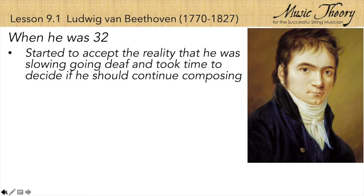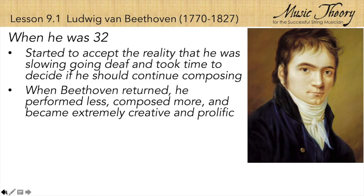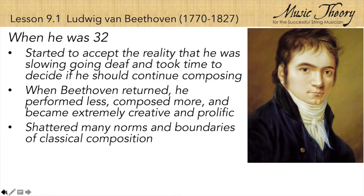It was at this age that Beethoven became aware that he was slowly going deaf, a realization so devastating that Beethoven had to take some time off to decide if he was going to give up or continue composing through his increasing deafness. After six months, Beethoven began composing again with new confidence and a sense of urgency. He forged a new path in music, shattering many of the norms and boundaries of classical composition.